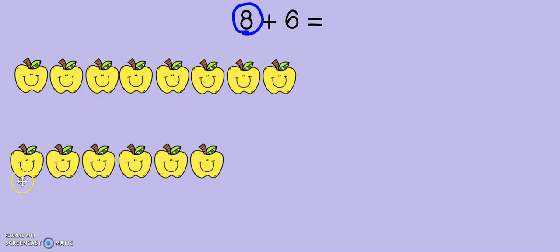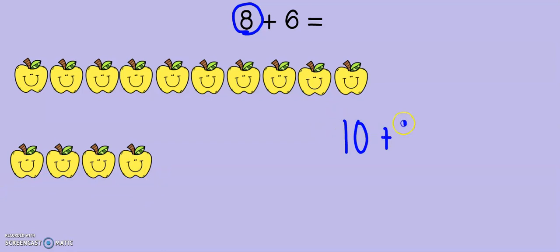Now, we have 8 apples and 6 apples. If I want to change that 8 into a 10, then I'm going to need to move an apple. That's 9 apples. I need one more to make it 10. So, now, instead of 8 plus 6, I have 10 plus 4 and I can add that pretty easily, can't I?